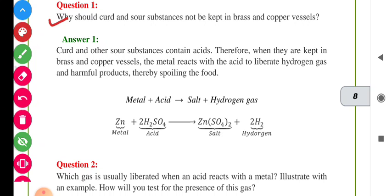Question number one: Why should curd and sour substances not be kept in brass and copper vessels? As we know students, curd and other sour substances contain acids. So when they are kept in brass and copper vessels, the metal reacts with acid to liberate hydrogen gas and harmful products, thereby spoiling the food. When brass and copper react with acidic substances, they form harmful salts and hydrogen gas, which is not good for our health.